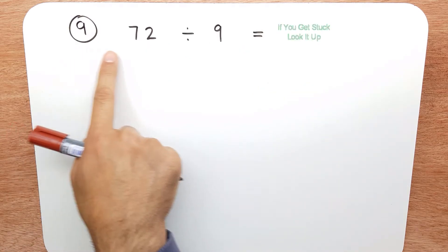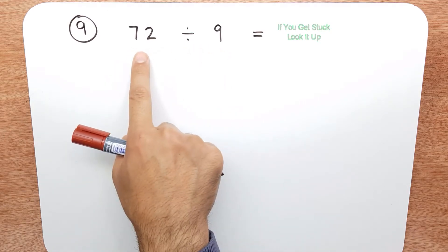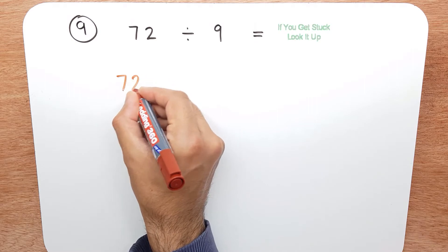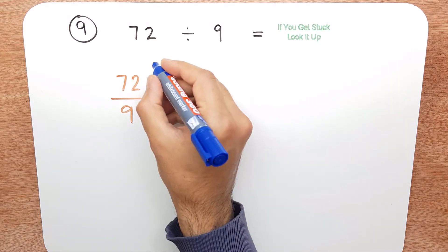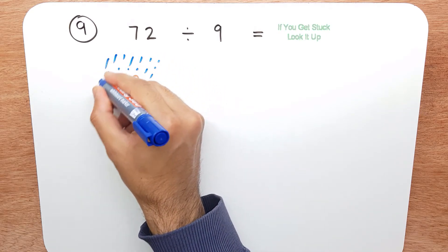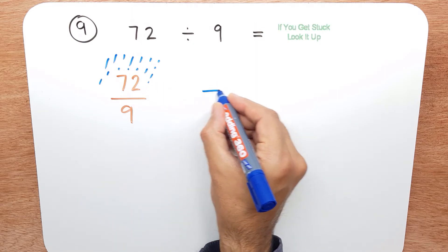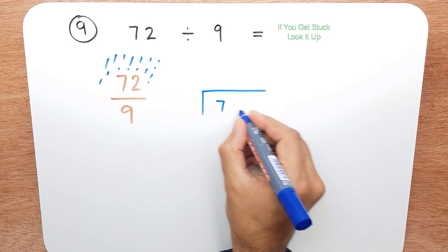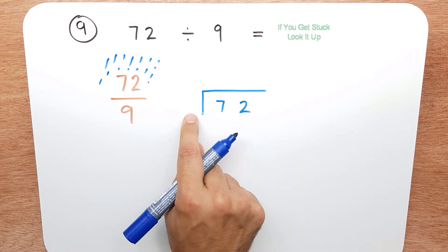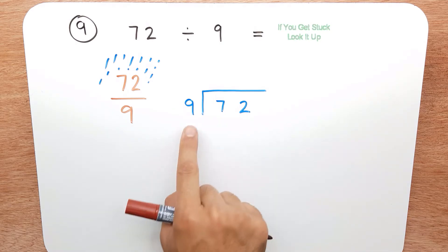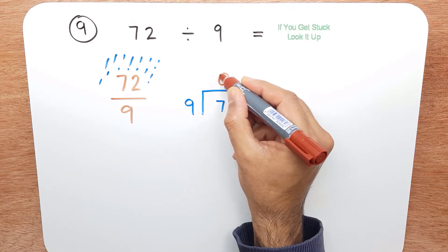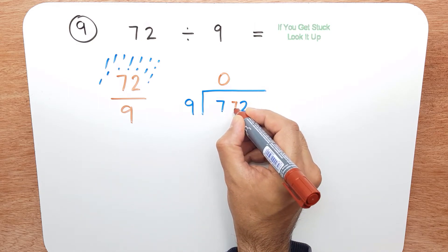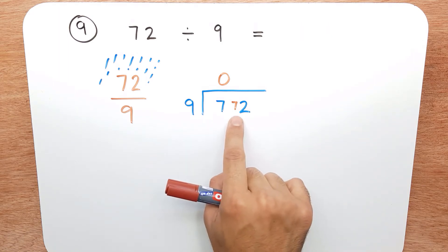Question 9 is seventy-two divided by nine, or seventy-two shared by nine. The way I like to write it: it's raining, and seventy-two is getting wet, so we build a bus shelter. Seventy-two goes inside because it needs to stay dry, and the nine goes outside. How many nines are there in seven? We can't get any, so the seven gets carried over to the next column.